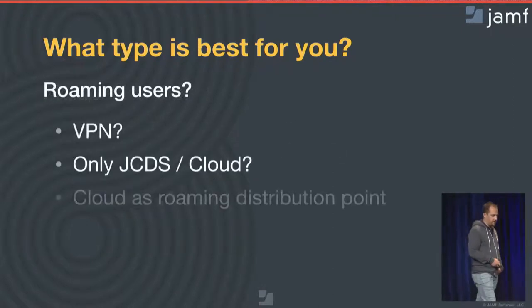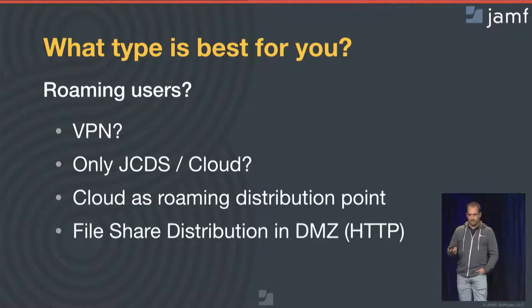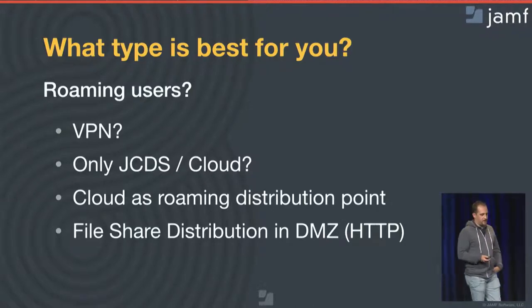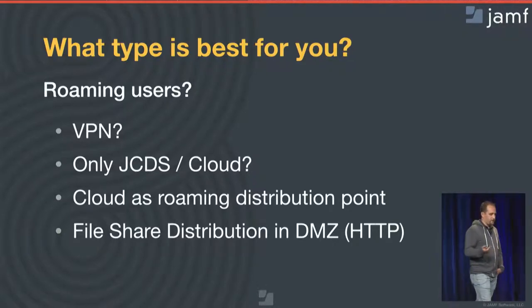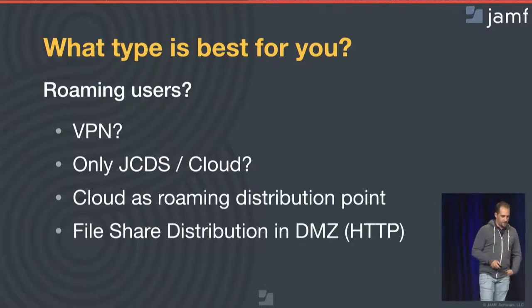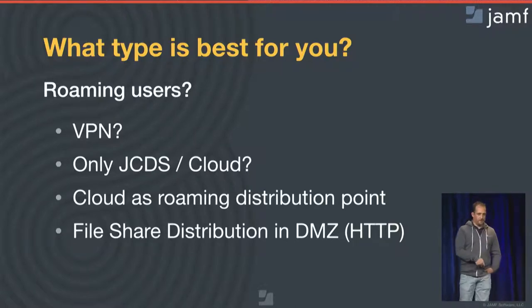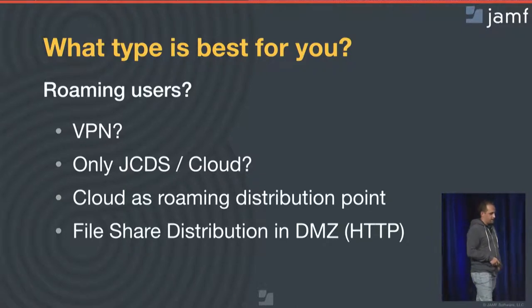And then finally, roaming users — that's where things become a bit more tricky. If you have users with MacBooks, they go from one meeting to another, from one office to another, even work from home, connect to public Wi-Fi. You'll have to think about how those users are going to get access to the content in your distribution points. If you're only using a cloud solution, that's straightforward. But you'll most likely want a situation where, if they are inside your network, they're directed to the internal distribution point, and when outside, pointed to a cloud solution.